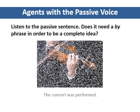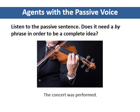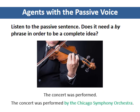The concert was performed. This sentence has an incomplete meaning. The agent is not obvious because many people can perform a concert. We do not know who performed the concert, so we need to include the agent.